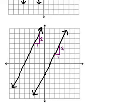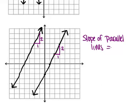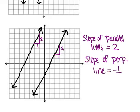Both of these lines have a slope of two. So the slope of the parallel lines equals two, which means the slope of a line that has to be perpendicular to both of those is going to be negative one-half, which is the opposite reciprocal. So the slope of the perpendicular line equals negative one-half. We need to create a line with a slope of negative one-half that passes through these two parallel lines so that we can figure out the distance between them.